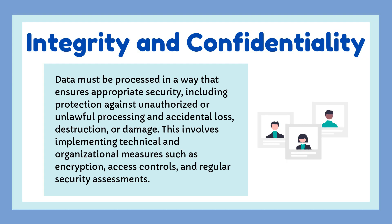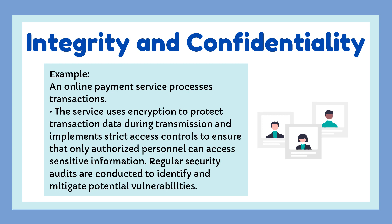6. Integrity and Confidentiality. Data must be processed in a way that ensures appropriate security, including protection against unauthorized or unlawful processing and against accidental loss, destruction, or damage. This involves implementing technical and organizational measures such as encryption, access controls, and regular security assessments. Example: An online payment service uses encryption to protect transaction data during transmission and implements strict access controls to ensure that only authorized personnel can access sensitive information. Regular security audits are conducted to identify and mitigate potential vulnerabilities.